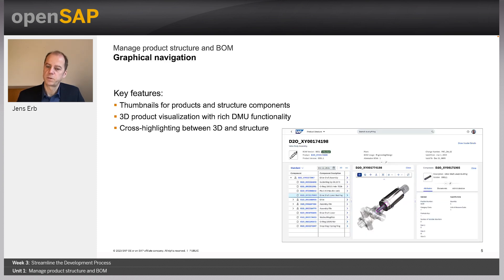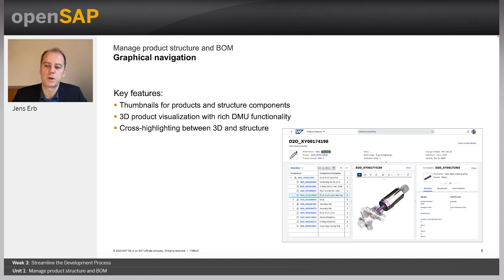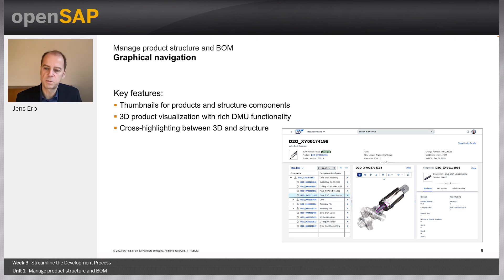Besides pure structure management and representation, you can also have a thumbnail next to the objects of the structure and a 3D visualization. You can navigate via the 3D object shown next to the product structure and vice versa. You can cross-highlight between the objects — be it leaf objects, assembly objects, or structure objects — and the 3D object shown next to it.